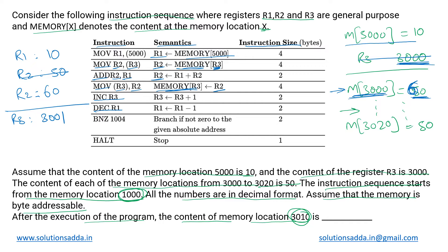Next, INC r3 increments r3 from 3000 to 3001. Then DEC r1 decrements r1 from 10 to 9. The next instruction, BNZ 1004, is branch-if-not-zero — this creates a loop. Unless the value in r1 is zero, we keep looping back to memory location 1004. Since execution started at 1000, this means the loop continues as long as r1 is nonzero, decrementing by one each iteration.